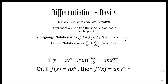Here is the basis for differentiation. If y equals ax to the power of n, then dy over dx equals anx to the power of n minus 1. Or if f(x) equals ax to the power of n, then the derivative of f will be anx to the power of n minus 1. We call this differentiating y with respect to x. It looks complicated so let's do some quick examples.